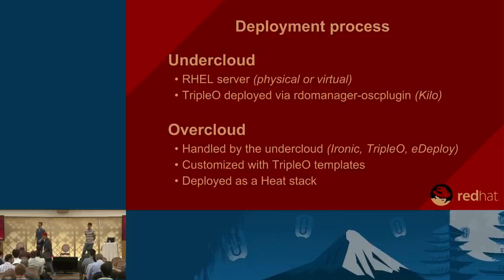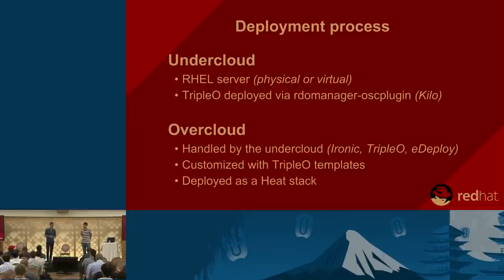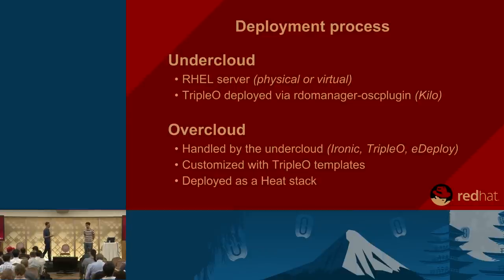The overcloud deployment is handled by Heat as a stack. It creates resources — for example, deploying Nova instances by using Ironic, Edeploy, and Triple O.